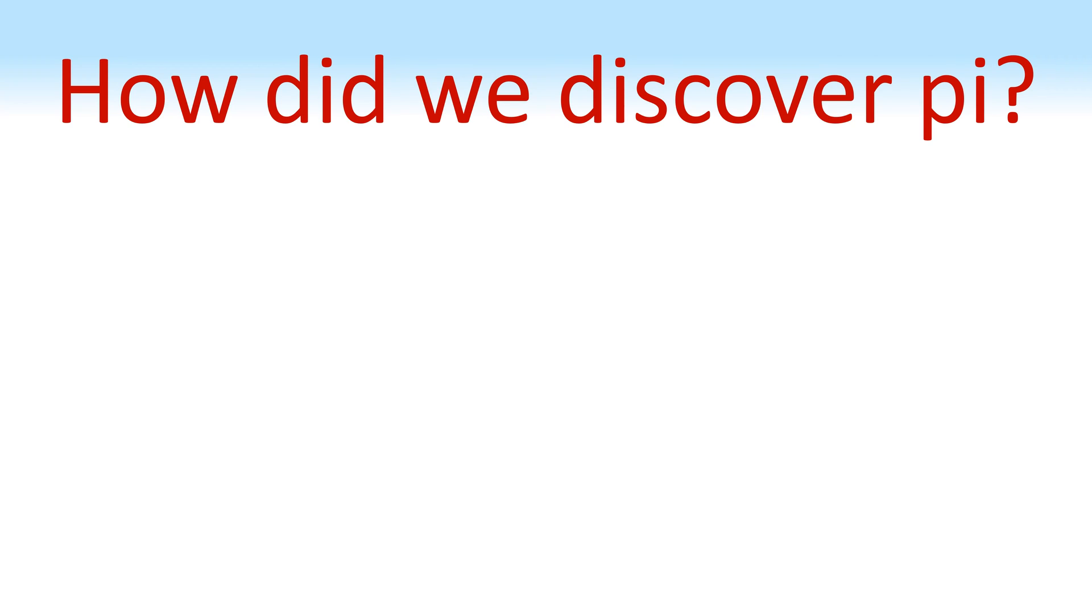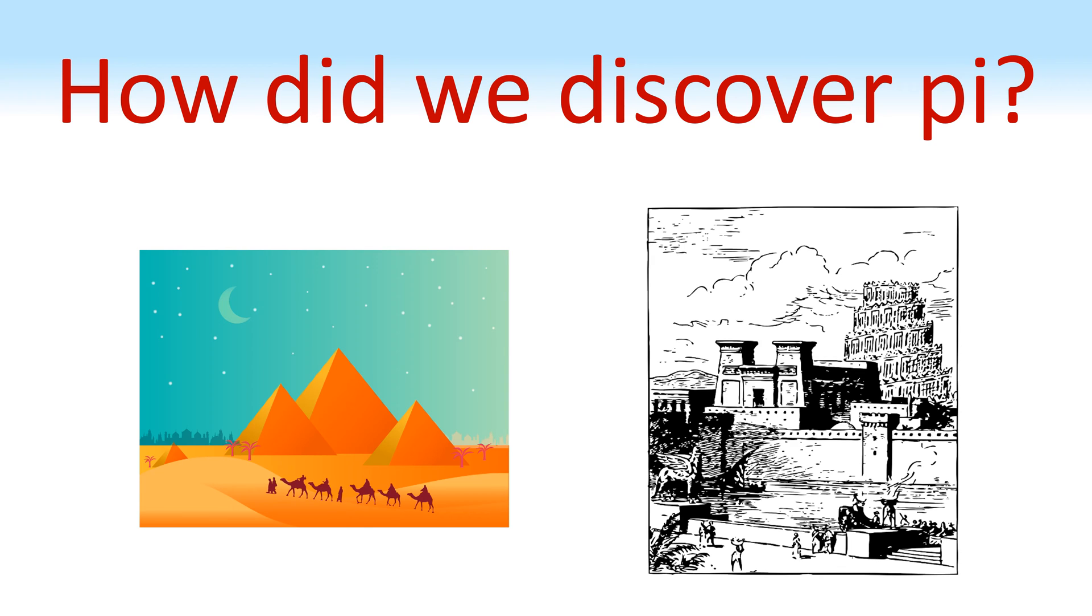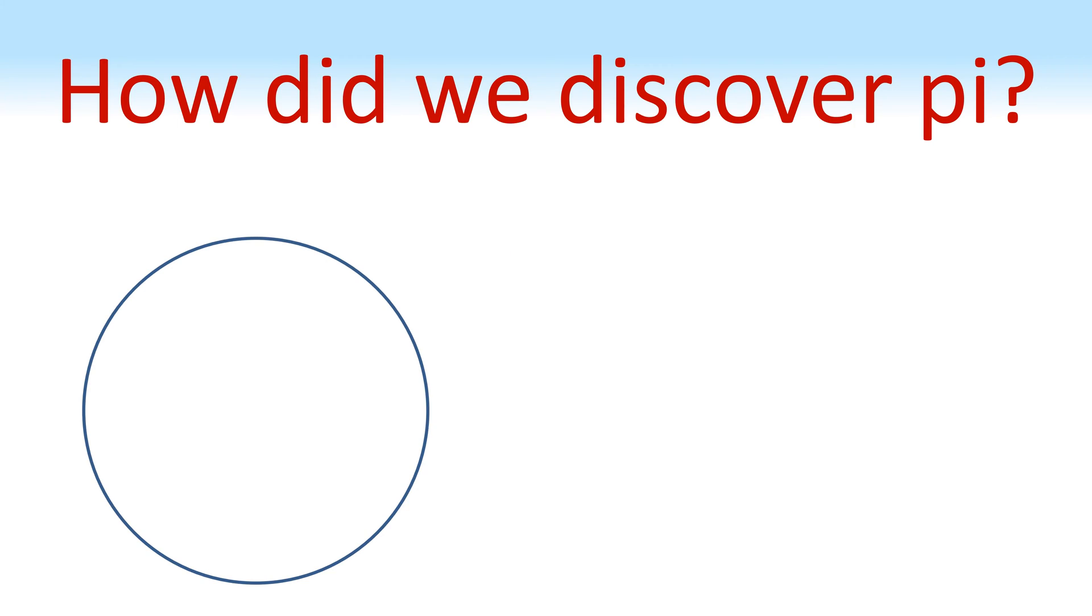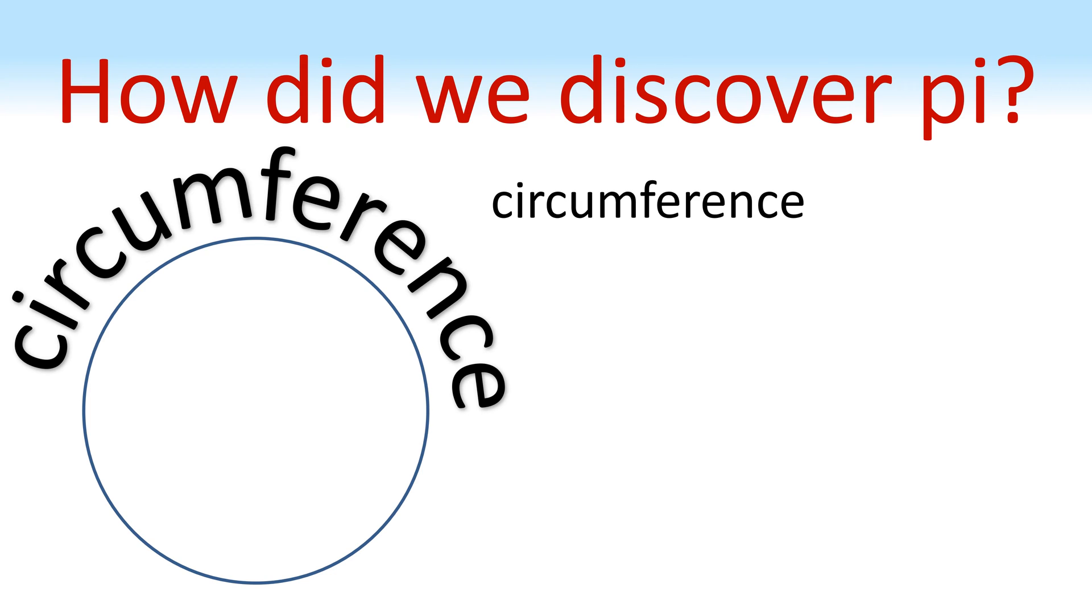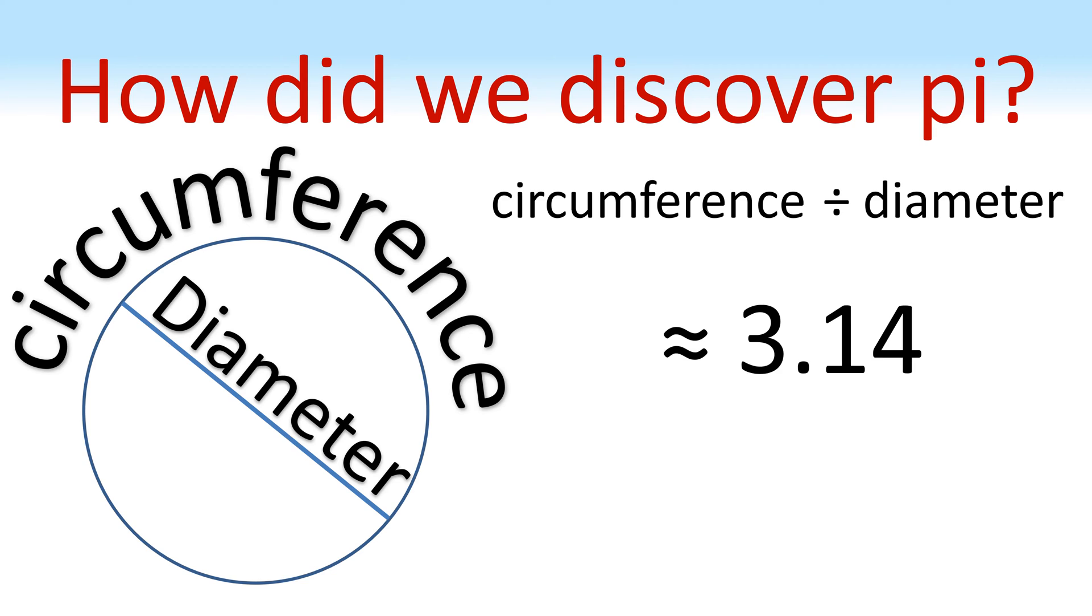Now you might be wondering how did we discover pi? The story of pi began thousands of years ago in ancient civilizations like Egypt and Babylon. People noticed that when they measured the distance around a circle, the circumference, and divided it by the distance across the middle of the circle, the diameter, they always got the same number. What was that number? You guessed it. It was pi.